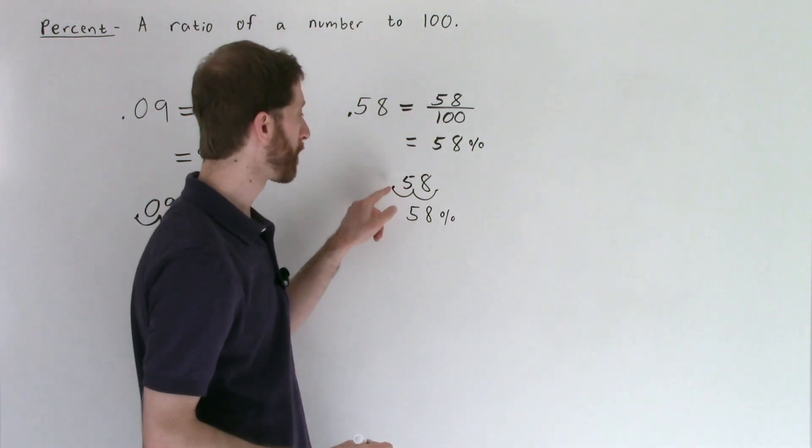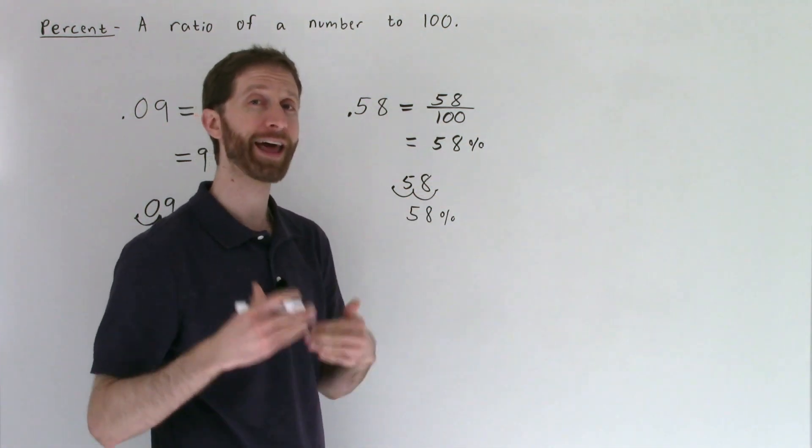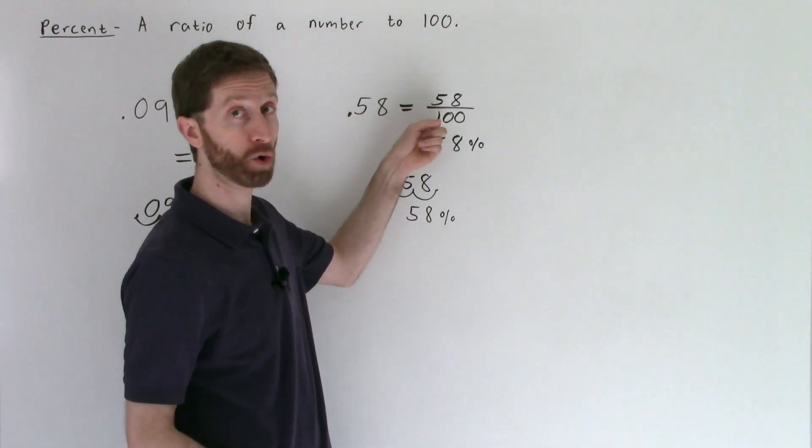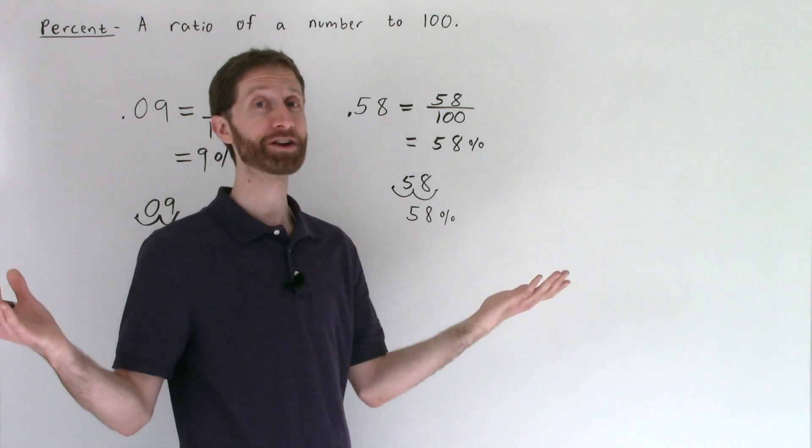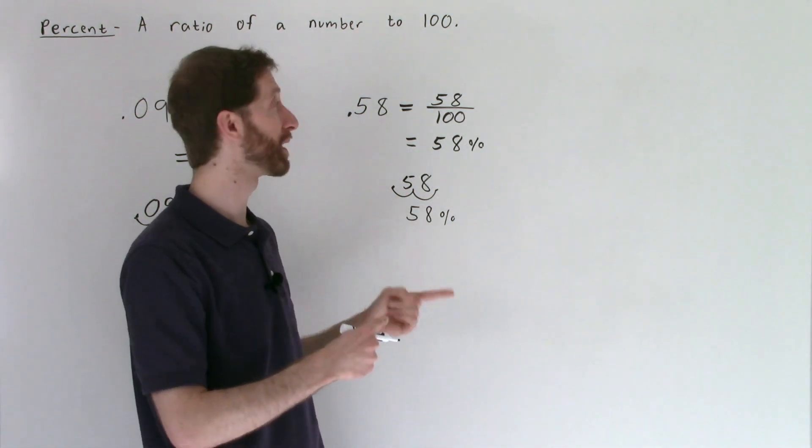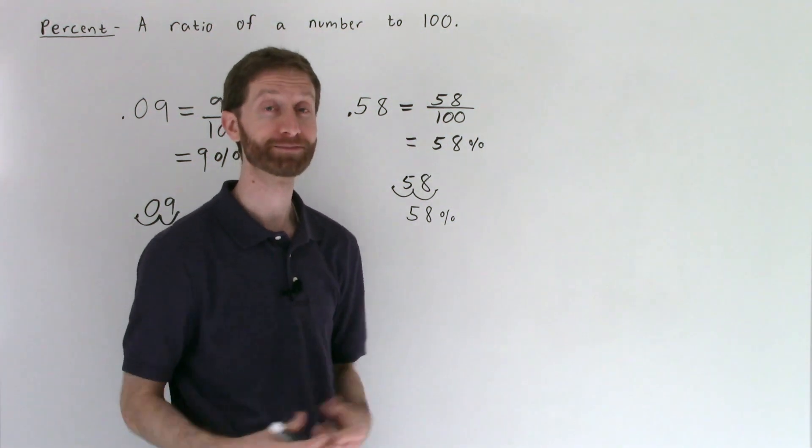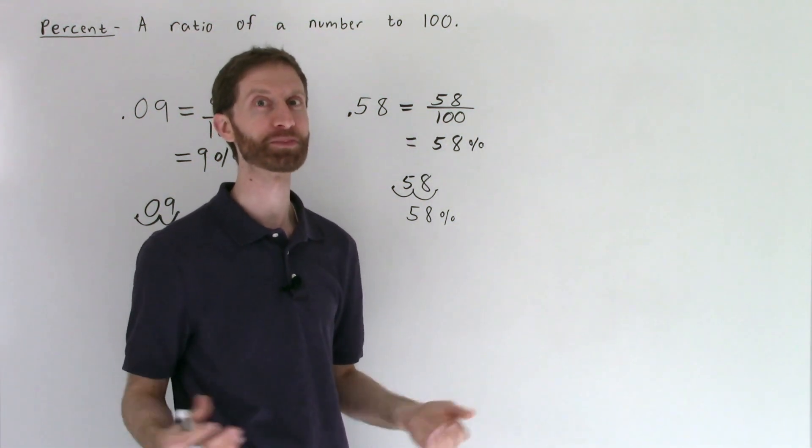Again, we're really multiplying by ten twice to figure out how many hundredths there are. I'd rather you understand it as 58 per 100 or 58 percent. There you have it. A trick that's been debunked, but the logic behind it which is stronger than any one trick. Go convert some decimals to percents.